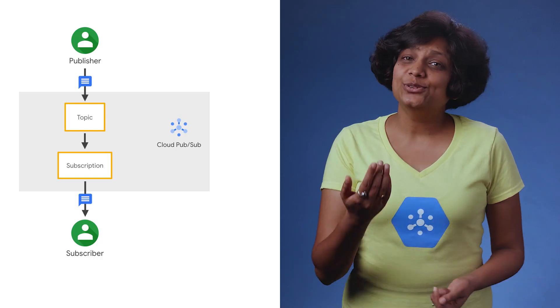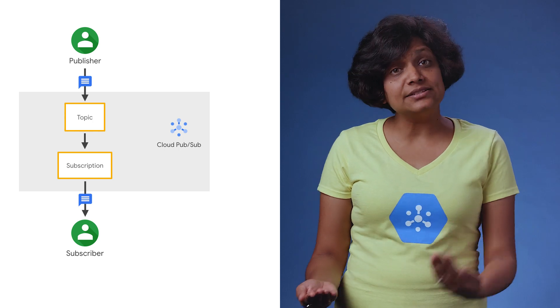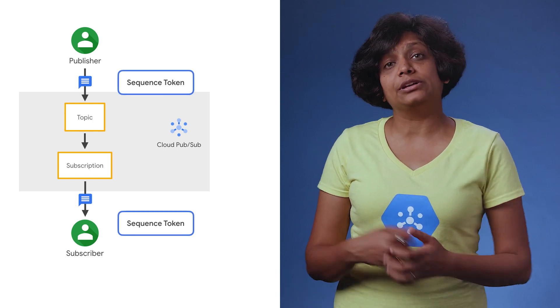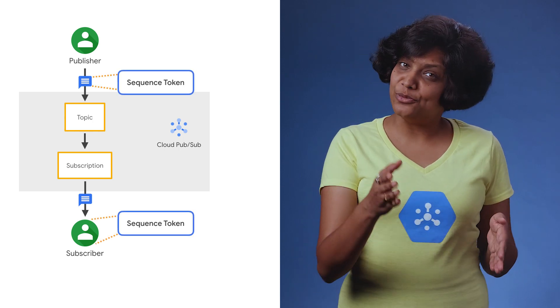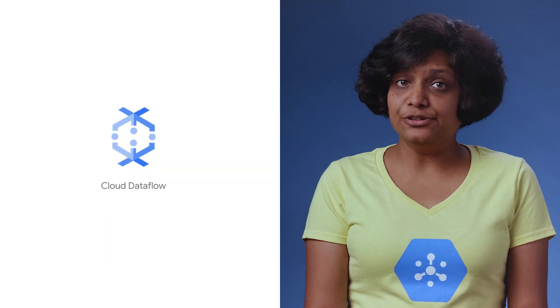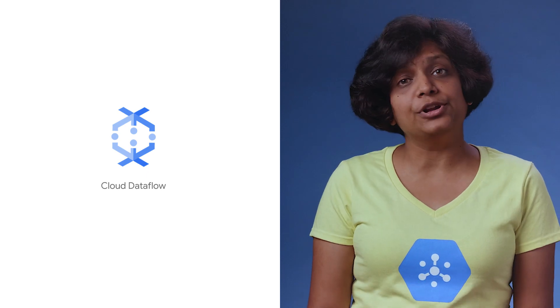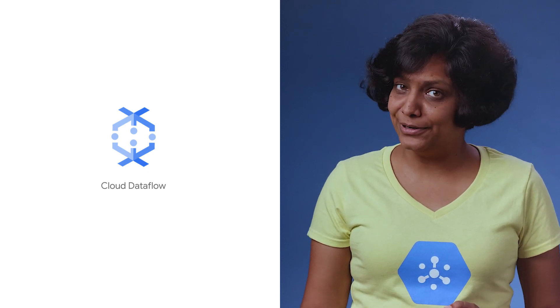A very simple way to achieve exactly-once processing is to rely on Cloud Dataflow's PubSub IO connector, which solves some of the harder problems like this for you. You can also achieve ordered processing by having publishers send a sequence token in the message — stay tuned for more on this in upcoming episodes. Alternatively, Cloud Dataflow gives you very simple-to-use tools to produce ordered output or process messages in order.